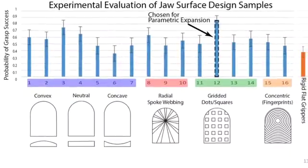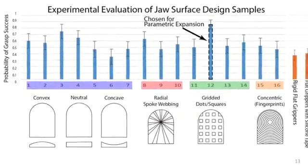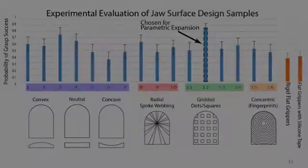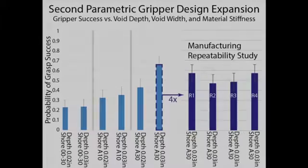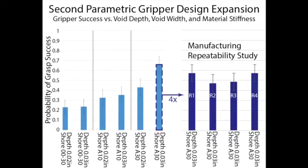We started by testing a spread of 16 initial concepts. Through a parametric expansion we produced a more focused set of grippers based on the previous most successful design. By iterating multiple times this process allowed us to navigate a high dimensional design space through the use of human intuition guided by automated robotic testing.